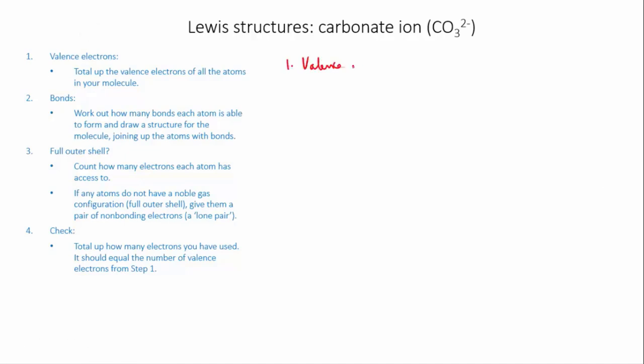Okay, so first we total up our valence electrons as normal. We have one carbon which has four valence electrons and we have three oxygens, and each of those oxygens has six valence electrons because it's in group six, which gives us a total of 18. All right, now here's the bit which is slightly different.